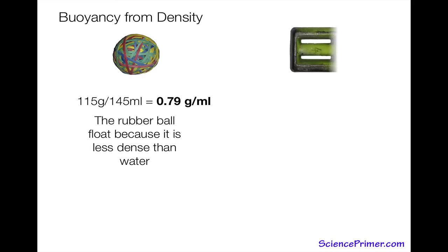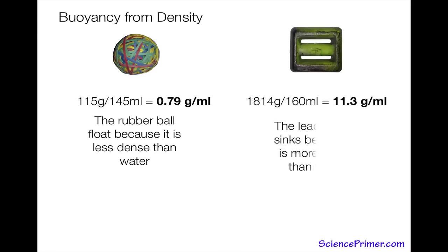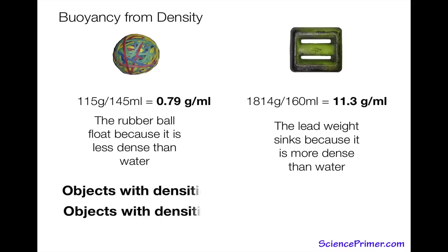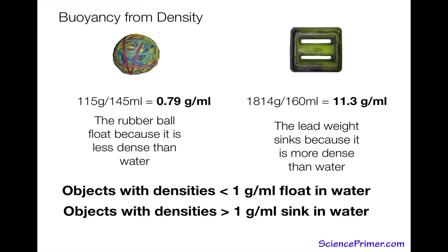The lead weight has a mass of 1814 grams and a volume of 160 milliliters, giving a density of 11.3 grams per milliliter. Since 11.3 is much greater than 1, the lead sinks because it is more dense than water. The general rule is: objects with a density less than 1 gram per milliliter float, and objects with a density greater than 1 gram per milliliter sink when placed in water.